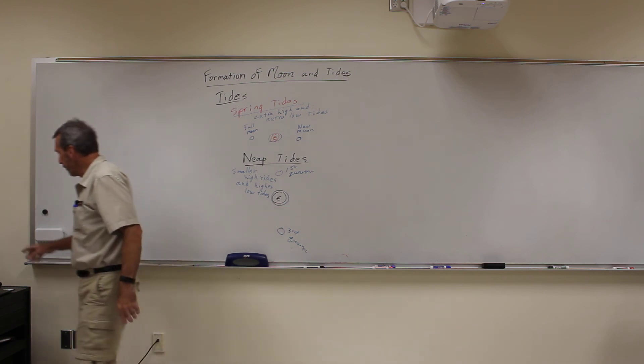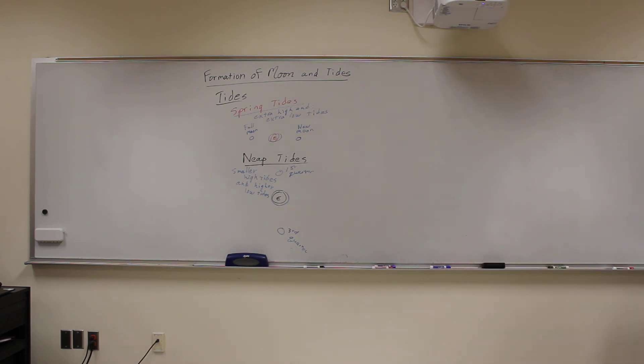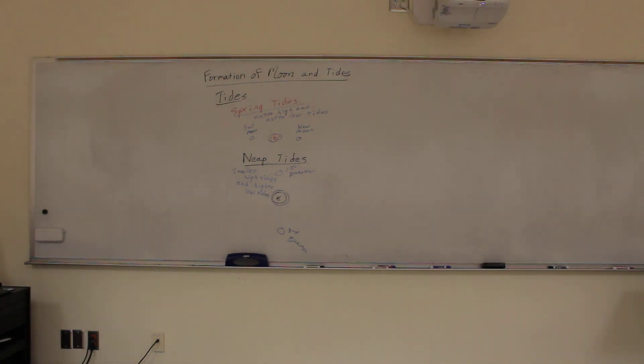So here's a couple pictures of some tides. Now there are certain places, the largest tides on the earth occur in Canada at a place called the Bay of Fundy.